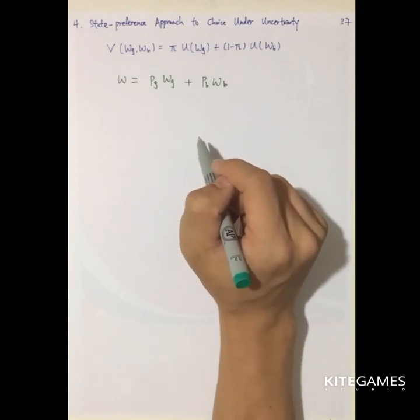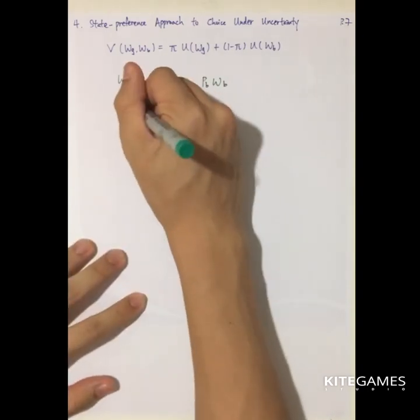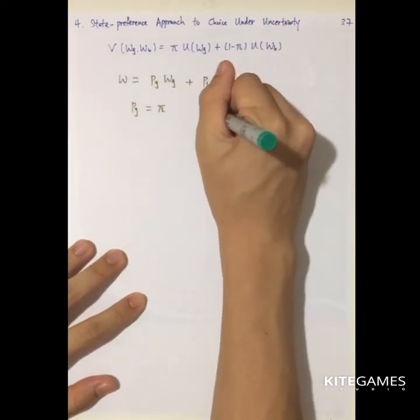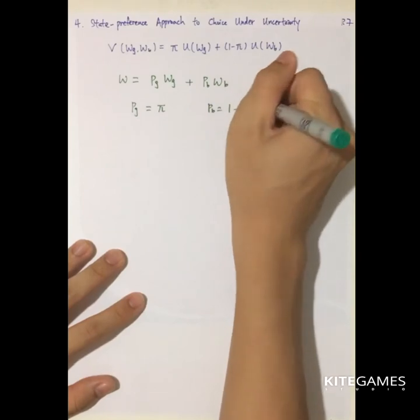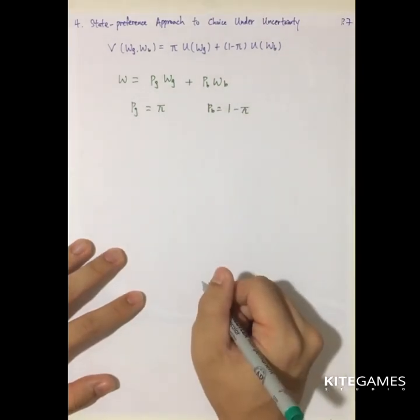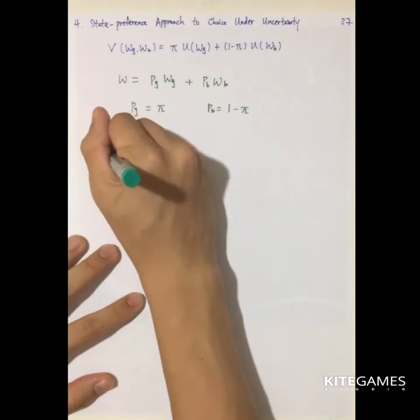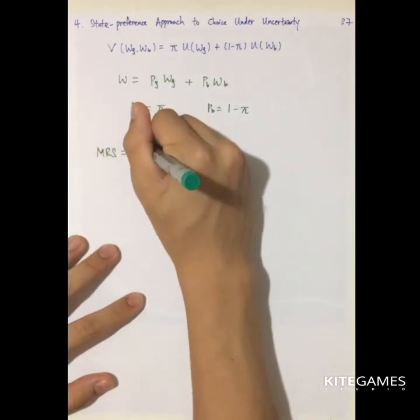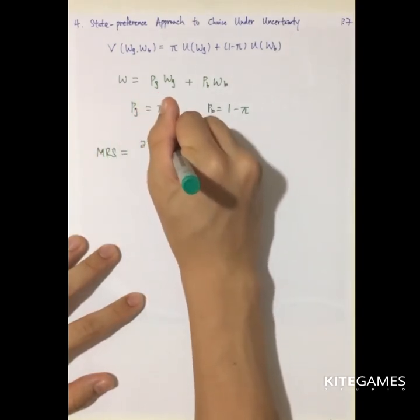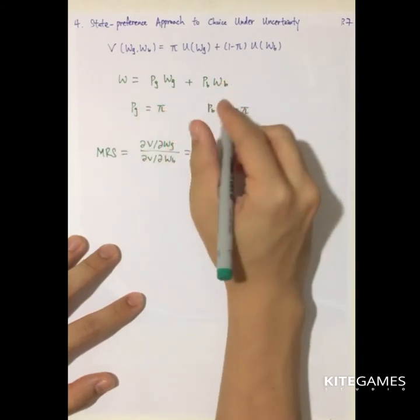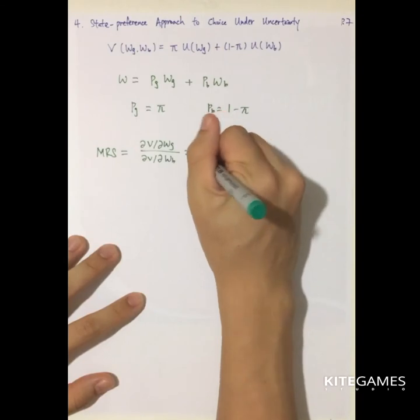So if the market is efficient and at the equilibrium, PG will be exactly equal to the pi and PB will be exactly equal to the one minus pi. So you can see the MRS is equal to partial V partial WG divided by partial V partial WB.